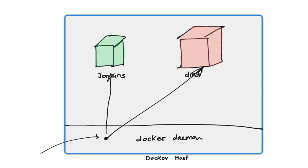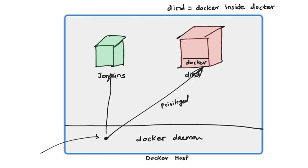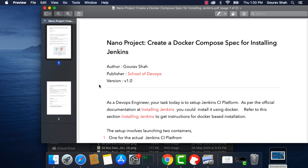When you launch this dind container, you also launch it with privileged access so that it can actually run containers inside it. This is like a simulated environment — that container itself acts like a simulated docker host with a docker daemon running inside it. When Jenkins connects to this docker daemon to run jobs, it connects to this container and uses an agent called docker. That way the jobs themselves are run as containers inside a container — for every job there'll be a container created inside this docker container. That's what we use dind, or docker-inside-docker, for.